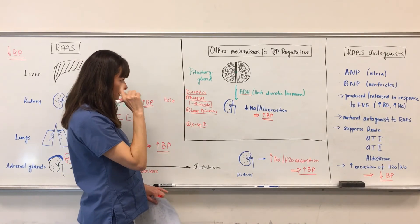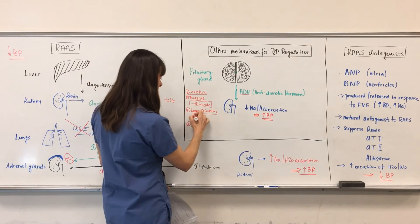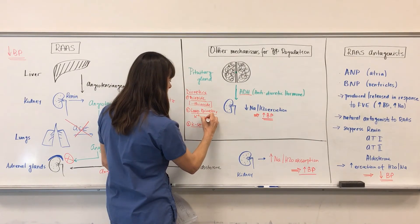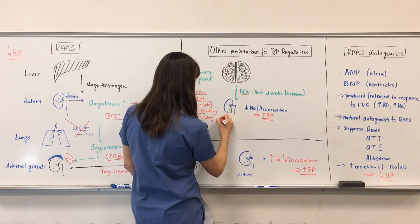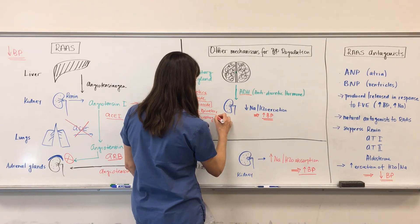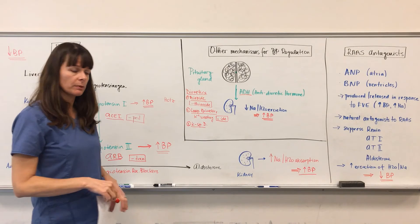Now, loop diuretics work on the loop of Henle in the kidney, and they are typically potassium wasting diuretics. And that is something like furosemide, so they end in -ide, which is also called Lasix. You've probably heard of Lasix or furosemide before.